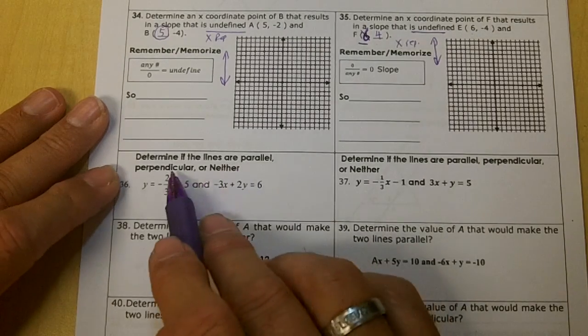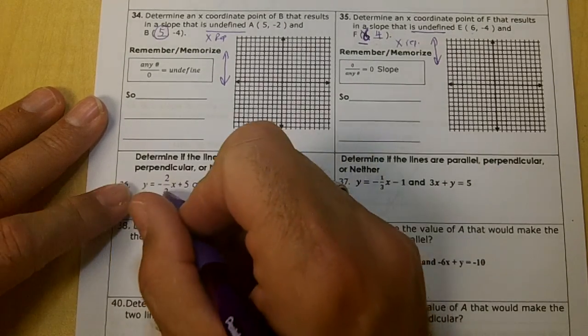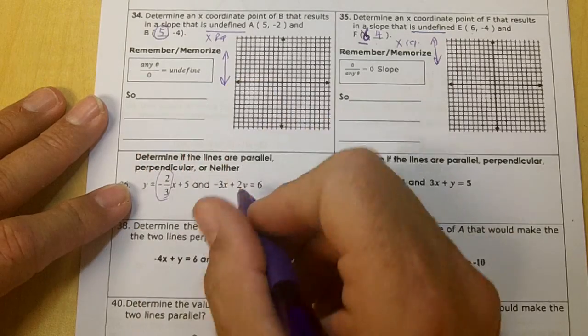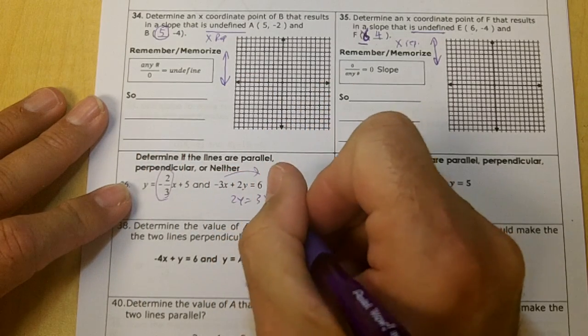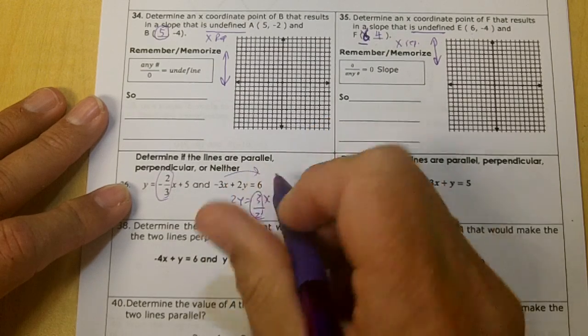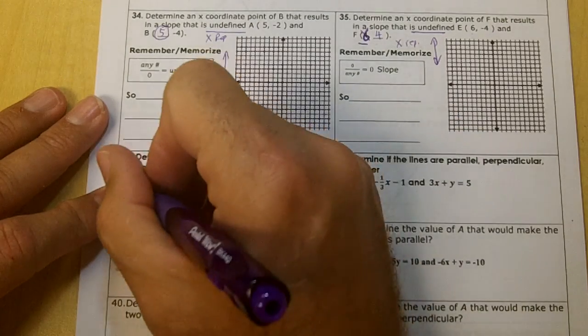Determine if the lines are parallel, perpendicular, or neither. This right here is my slope. Over here, I'm going to move the x over, then divide by 2. So this right here is my slope. They're opposite reciprocals. They're perpendicular, aren't they?